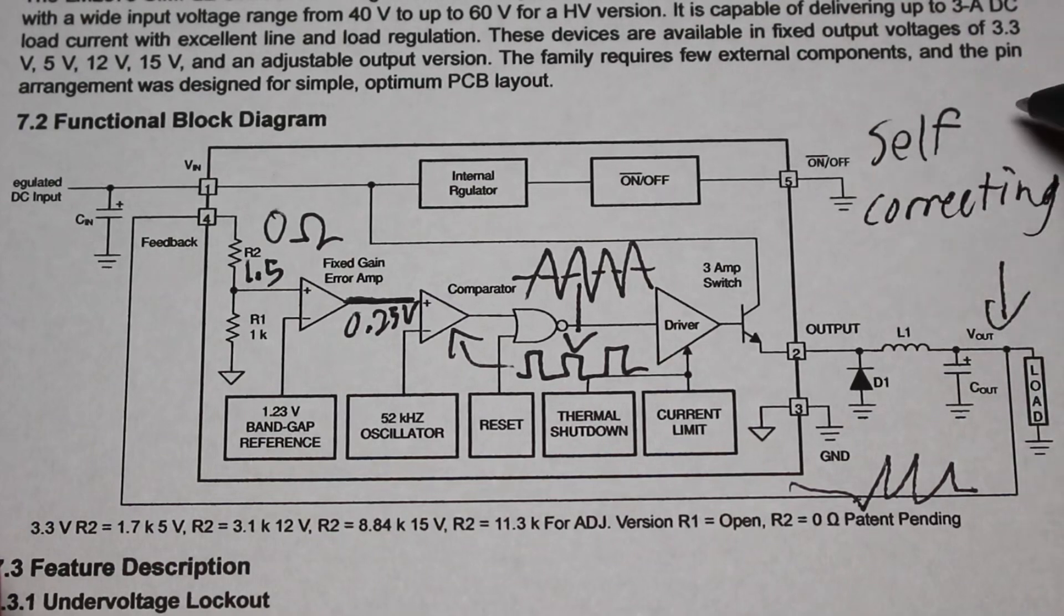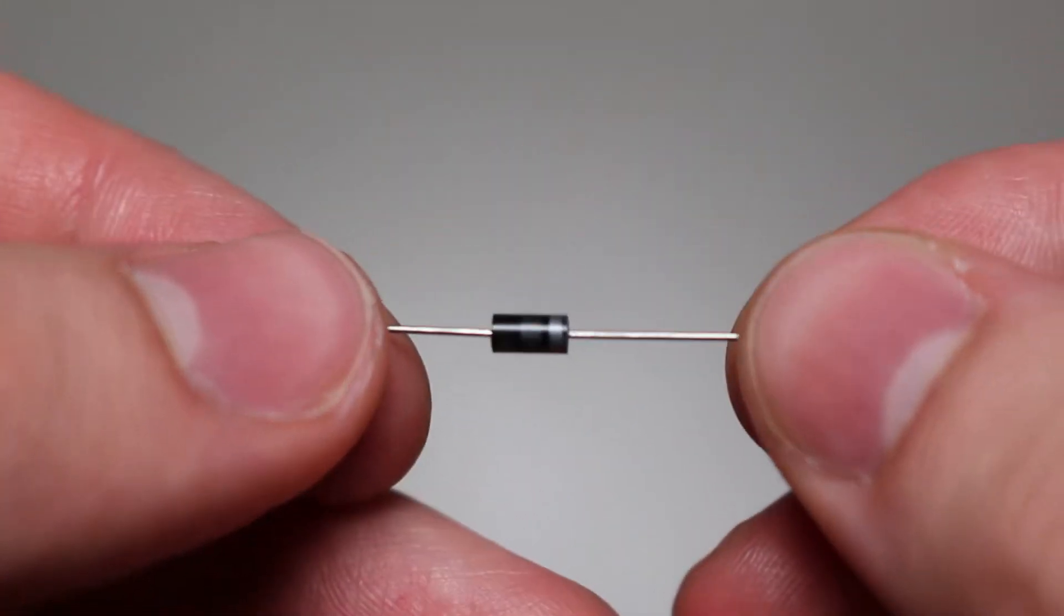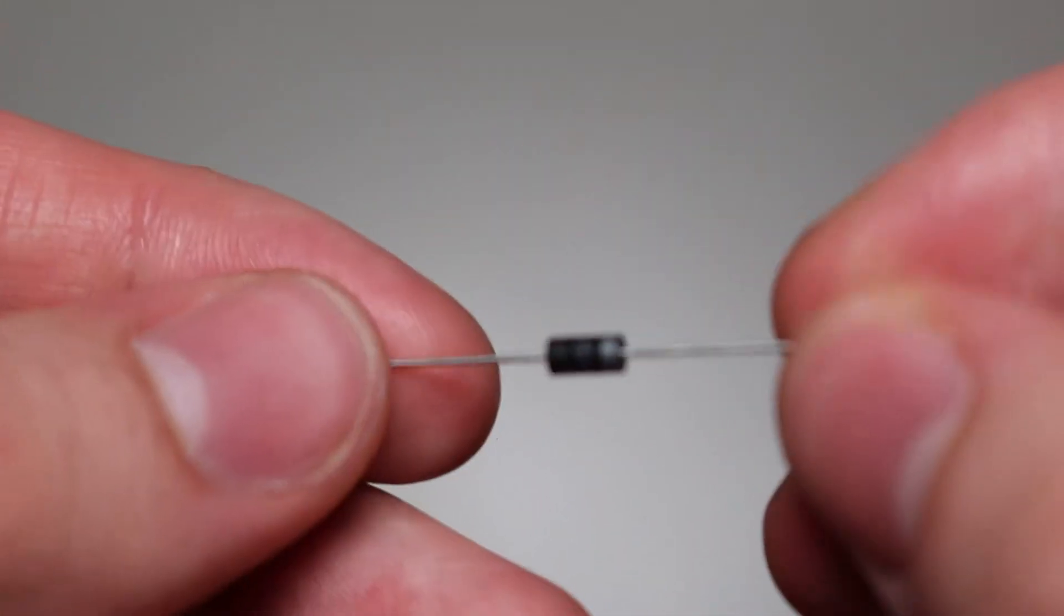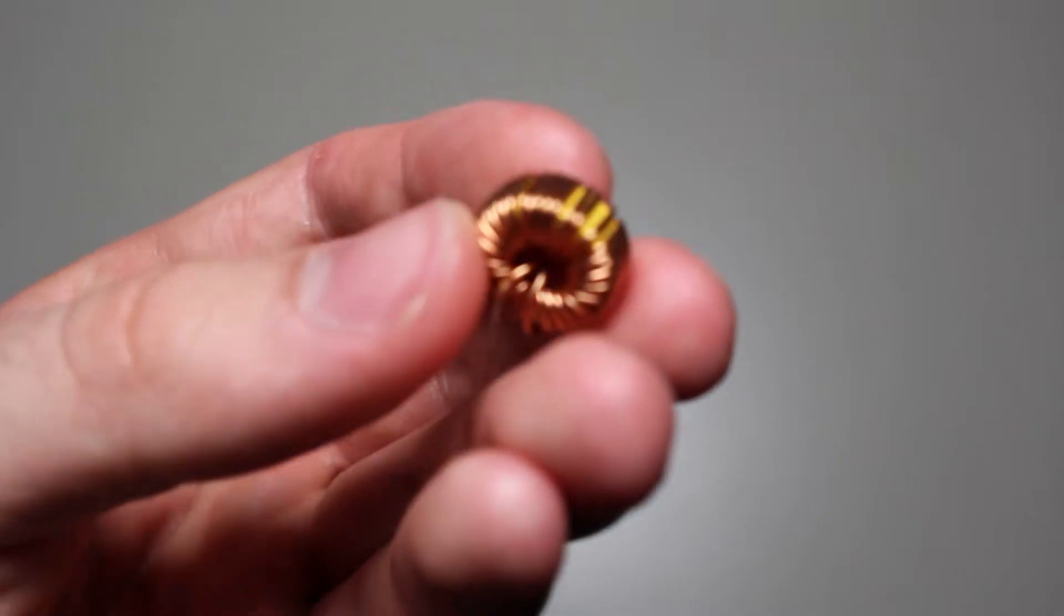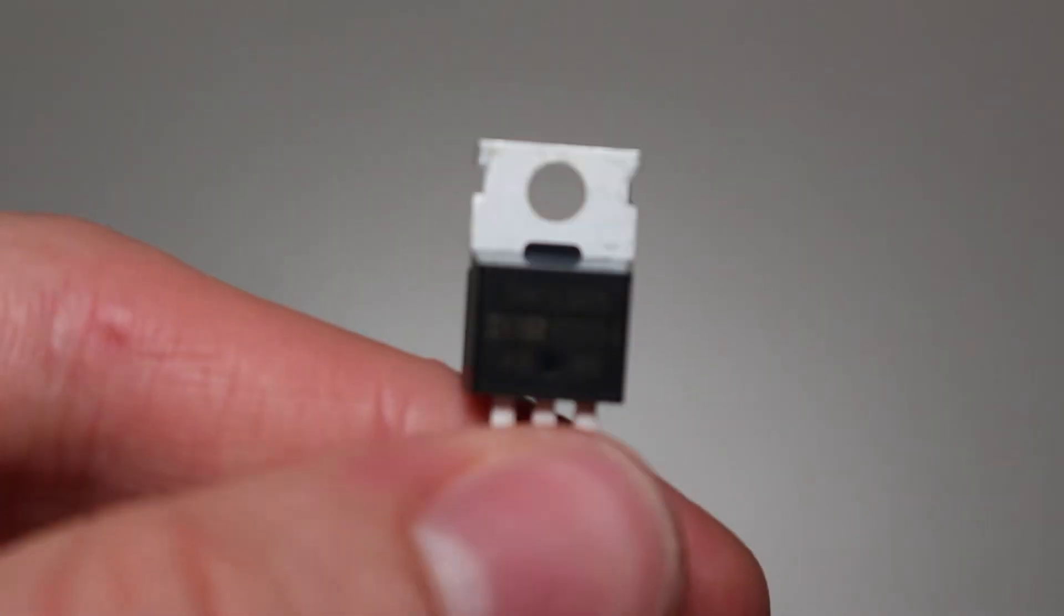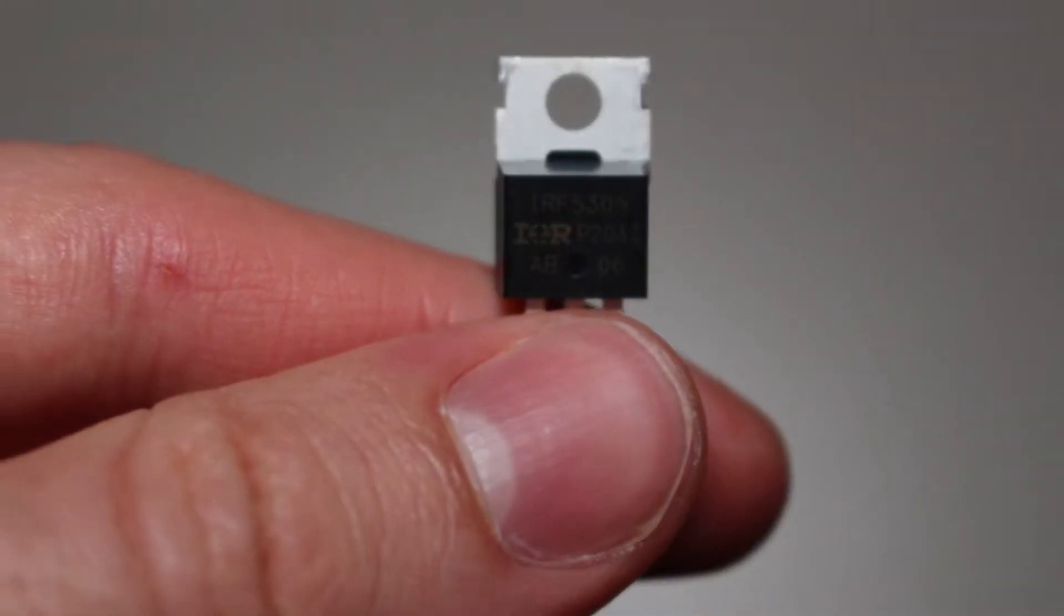Now that we have an example and understand how a buck converter like this should work, let's get to designing one of our own. I will be using a 1N5819 Schottky diode because of its low voltage drop, a 100 microfarad capacitor, a 100 microhenry inductor, and a P-channel IRF5305 MOSFET.